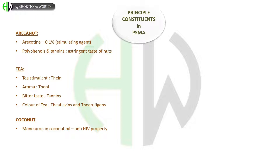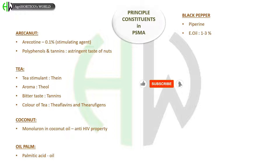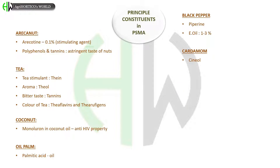Next, in coconut, monolaurin is present in coconut oil, which has anti-HIV property. In oil palm, the oil consists of palmitic acid. In black pepper, the major constituent present is piperine, and essential oil is about 1–3%. In cardamom, the major principal constituent is cineol.